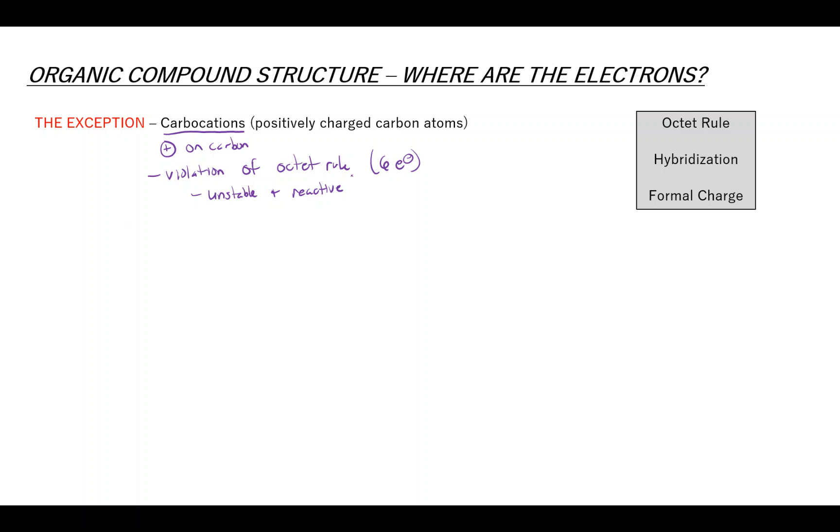So what does a carbocation look like? Well, it only has six electrons surrounding it. So this is usually going to be a carbon with three sigma bonds surrounding it that has a positive charge, three sigma bonds, no lone pairs, a positive formal charge because it doesn't have enough electrons, and the hybridization of this carbon is sp2.